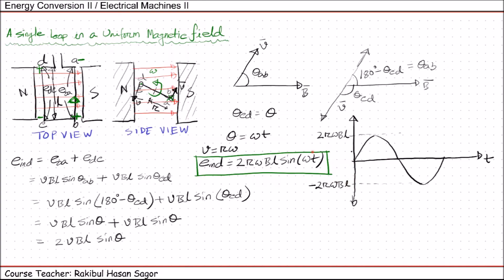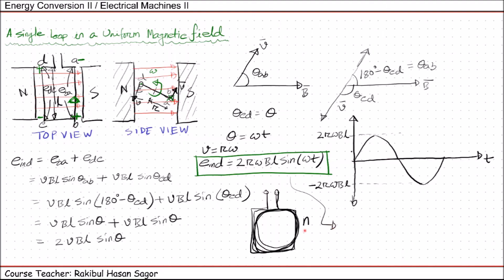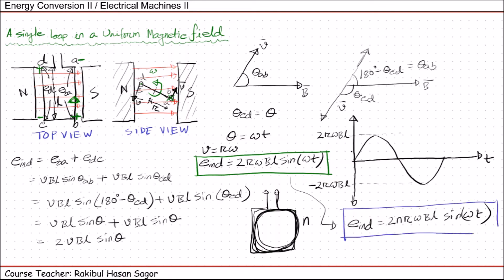One thing to note: this E_induced is for one single loop. But if you have N number of loops in this conducting wire, then E_induced will be multiplied by N. So E_induced can be written as 2NrωBL sin(ωt). This is the final equation for induced EMF having N number of turns placed in a uniform magnetic field.